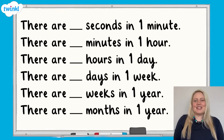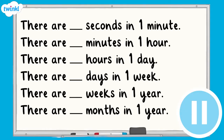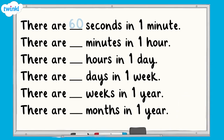Can you complete the missing spaces in these sentences? There are 60 seconds in one minute, 60 minutes in one hour, and 24 hours in one day. There are 7 days in one week and 52 weeks in one year. There are 12 months in one year.